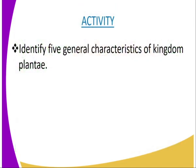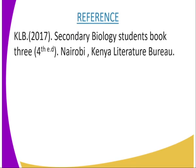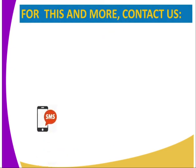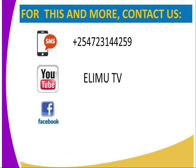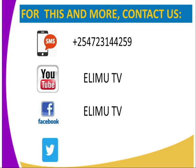Having done that, we can have the following activity, whereby you are required to identify five general characteristics of Kingdom Plantae. For more information on this lesson, you can refer to KLB Secondary Students Book 3, fourth edition, Kenya Literature Bureau. To get this lesson and many more biology lessons, you can send us an SMS through the number on our screen, or subscribe to either YouTube or Facebook for Elimu TV, or send us a message on our Twitter page, which is ElimuTV underscore Kenya. Subscribe to learn more and we shall learn together. Thank you.